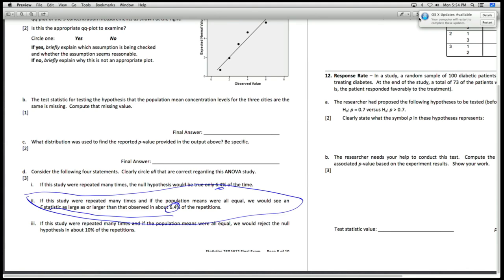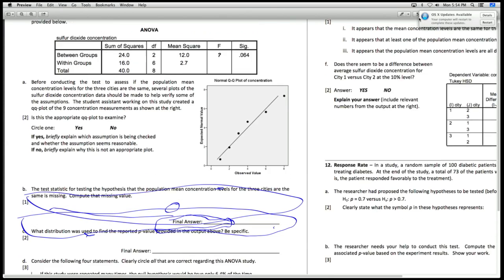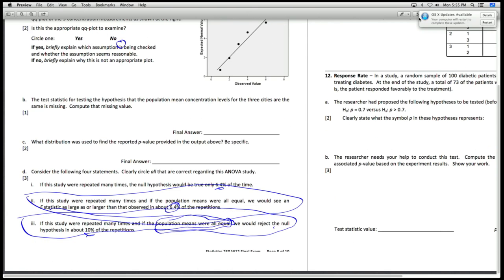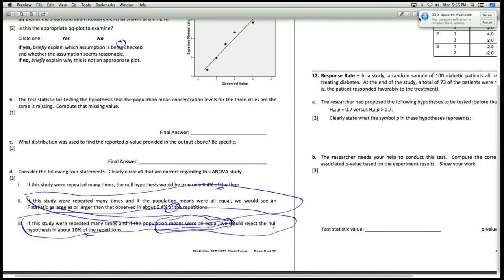And number three, if the study repeated many times, and if the populations were all equal, we reject the null hypothesis in about 10% of the repetitions. So this is saying, if the null hypothesis were true, because this is the null hypothesis right here, the population means were all equal. If the null hypothesis were true, we would reject the null hypothesis 10% of the time. And this is true, because that's the definition of a significance level. So we set the significance level at 10% up here. And that's why down here, our type 1 error rate, because this is basically a type 1 error rate, is 10%.